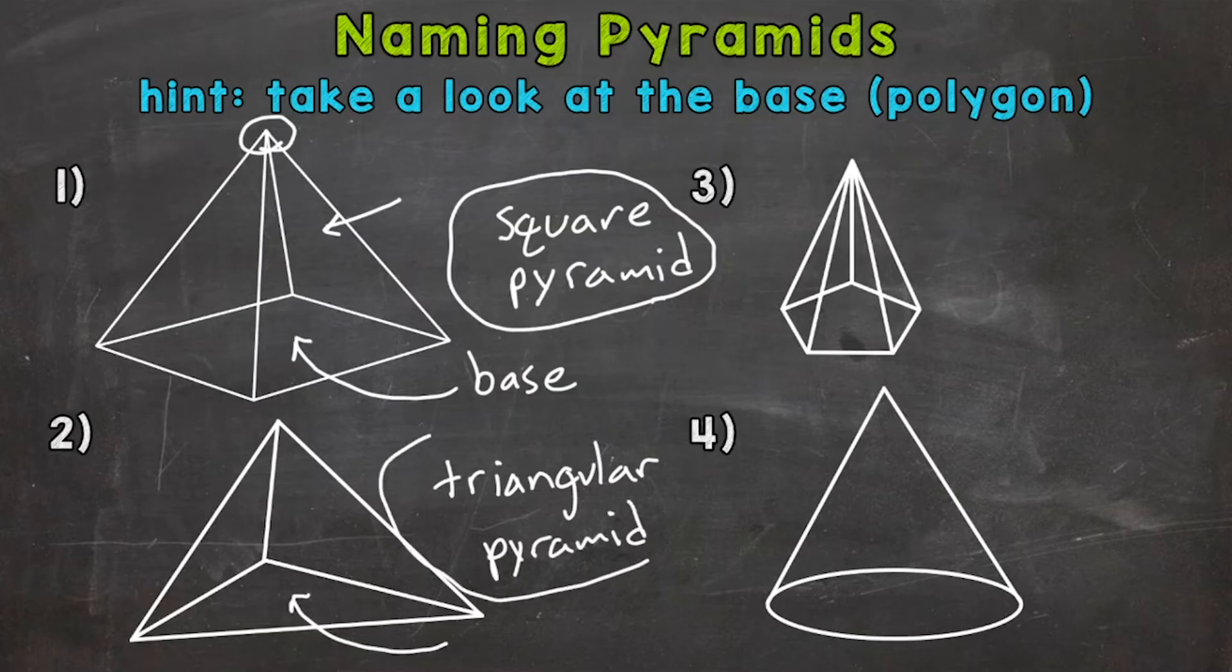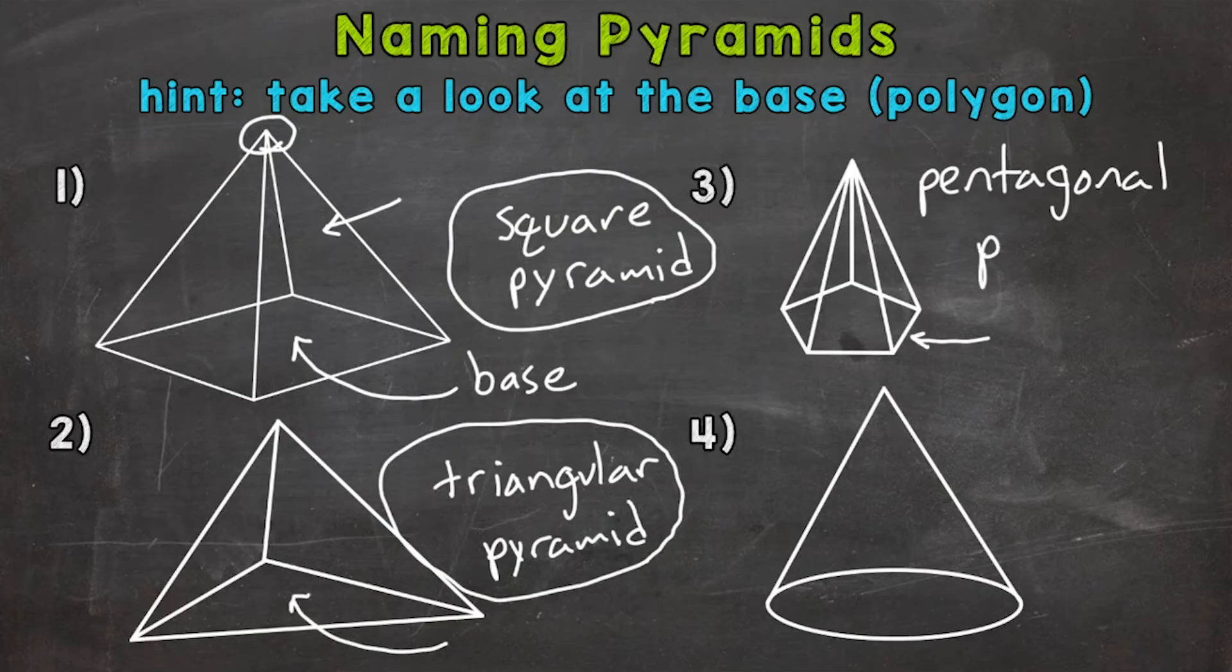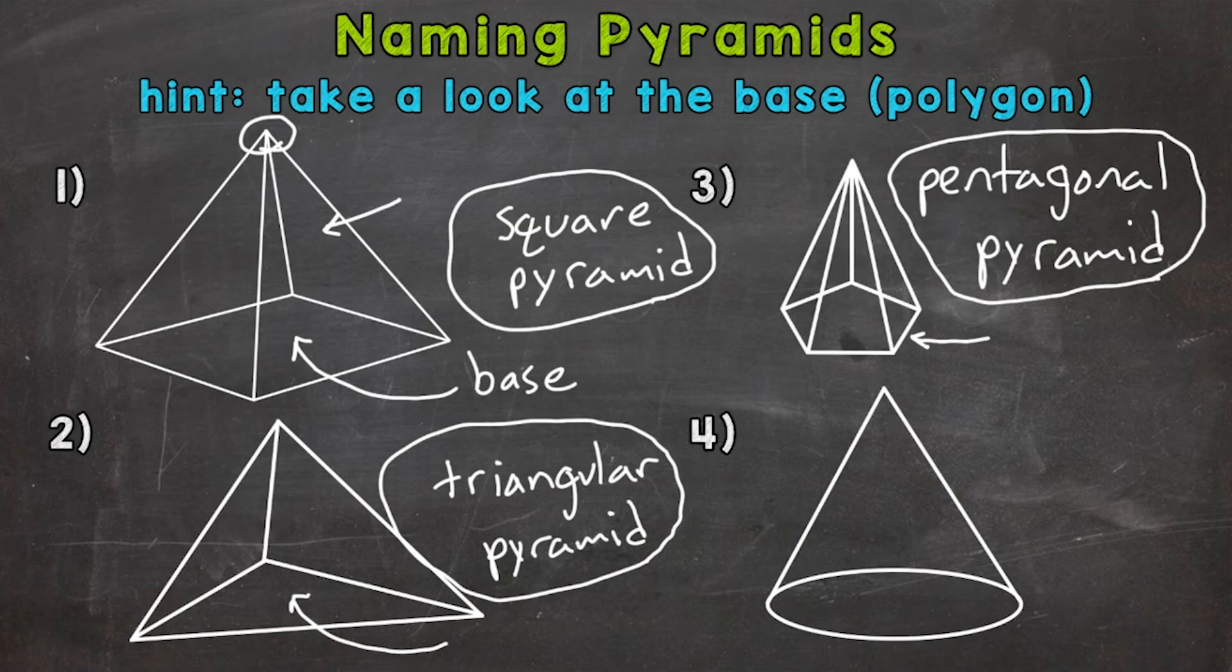Number three looks like we have a pentagon base, so this is a pentagonal pyramid. And lastly, we actually have a counter-example that is not going to be a pyramid. This is